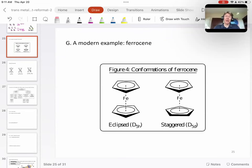Now, let's talk about a more modern example of a transition metal complex involving a newly or more recently discovered ligand called ferrocene.